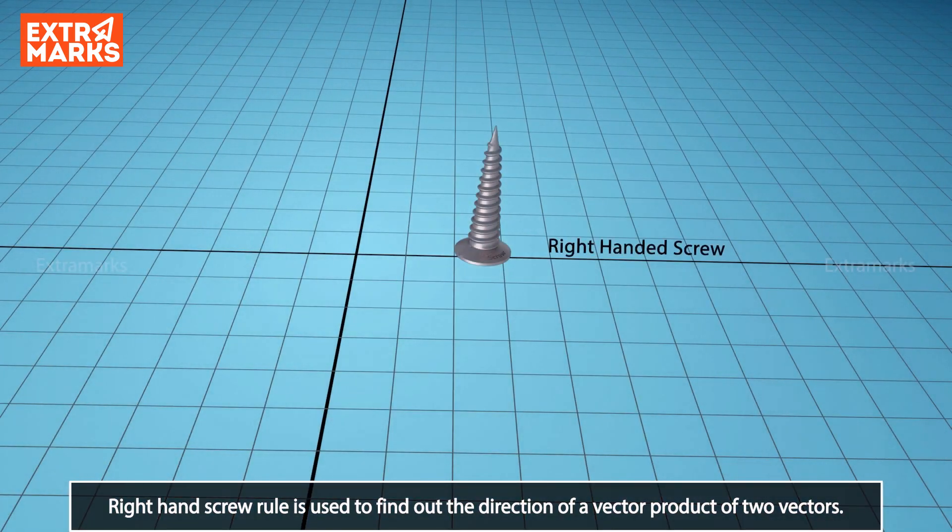Right-handed screw rule is used to find out the direction of a vector product or cross product of two vectors.